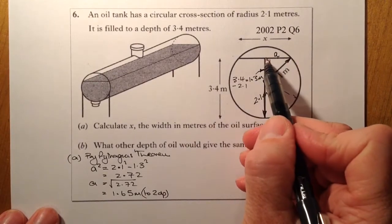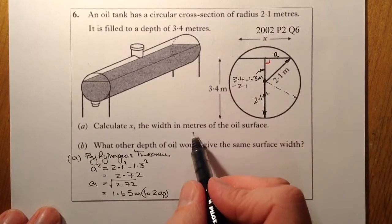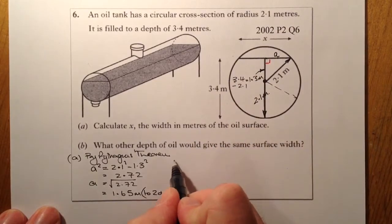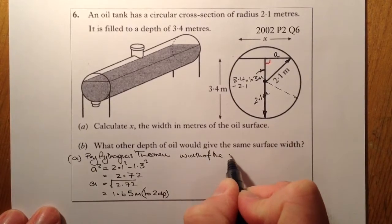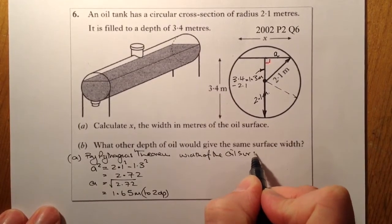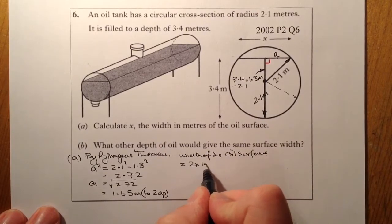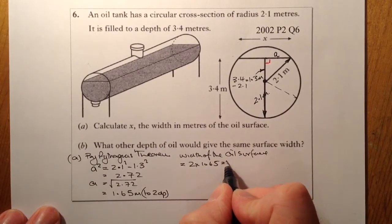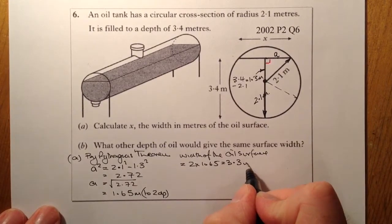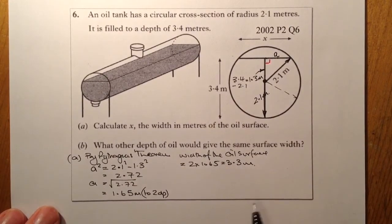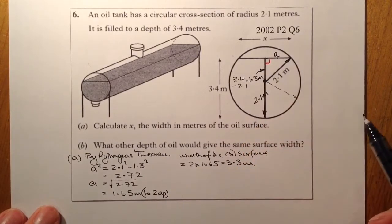So I've found out what that width is there. The width of the oil surface is going to be equal to 2 times 1.65, which would give me 3.3 metres. So that will be part A complete. I've worked out what that size is there.